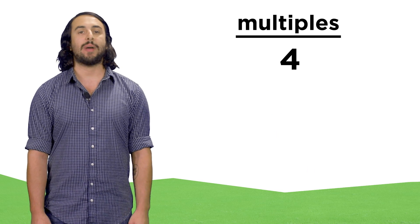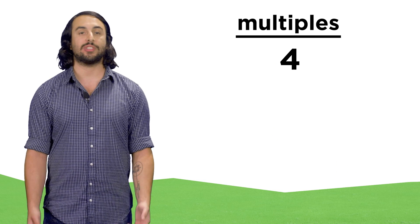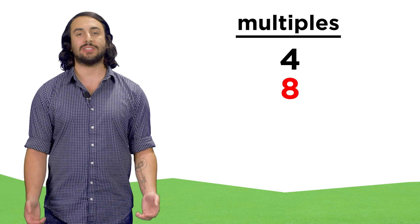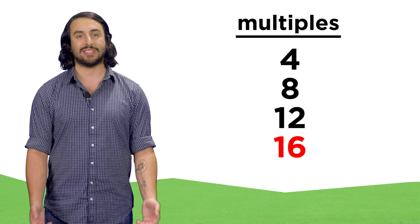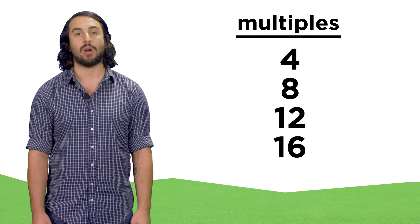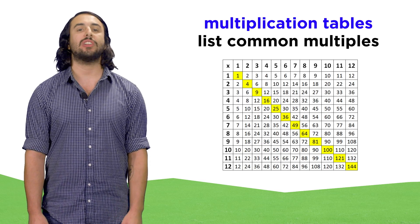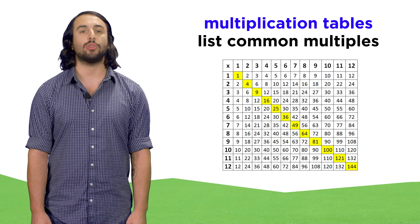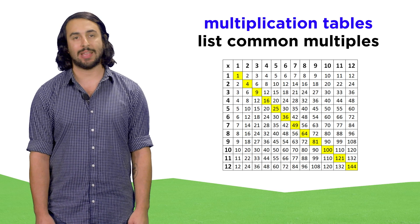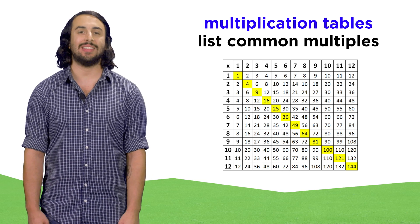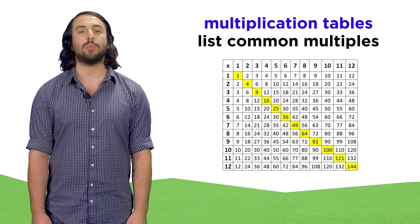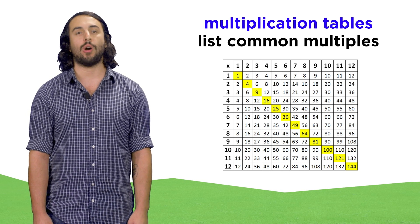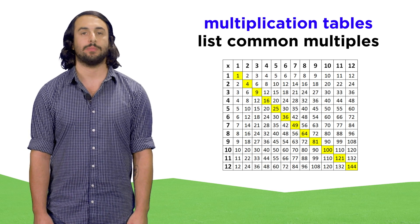What about for the number four? Well, that would give us four, eight, twelve, sixteen, and so on. And we could construct multiplication tables like these as we go through all the numbers.